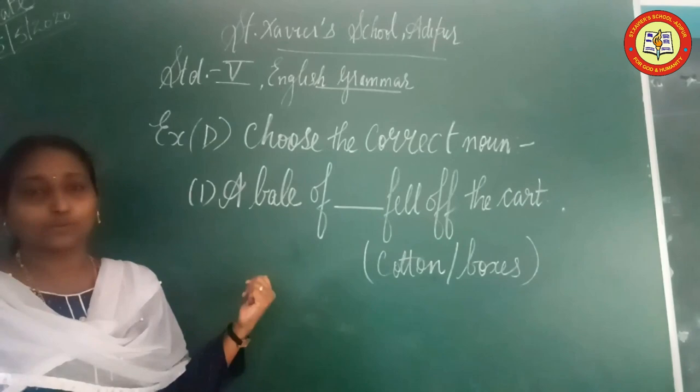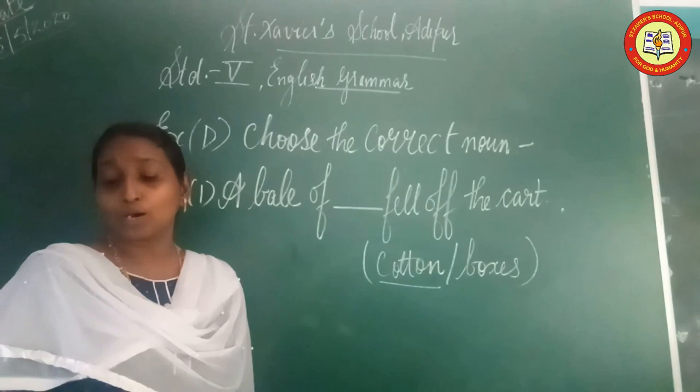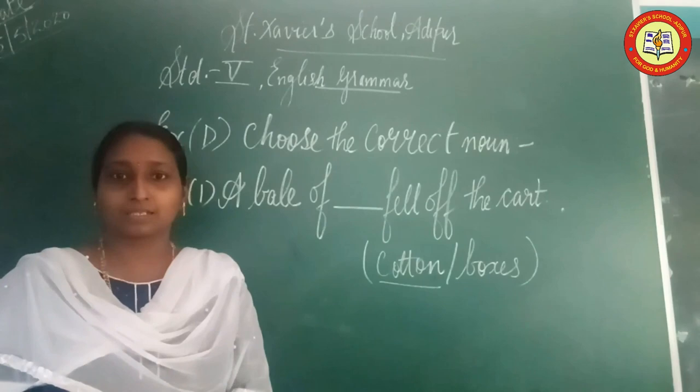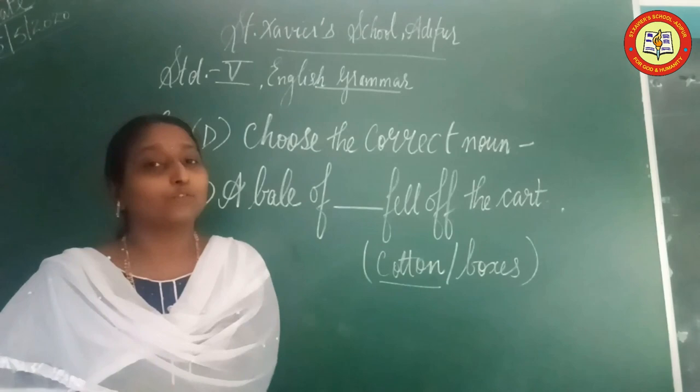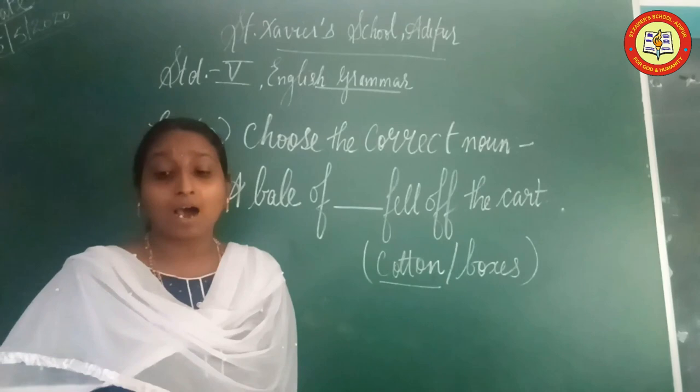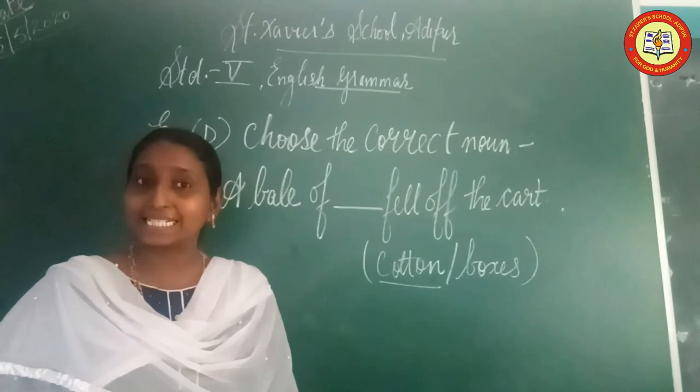Exercise D: Choose the correct word to complete each sentence. First: 'A bale of cotton fell off the cart.' Cotton is the correct answer. Second: 'We saw a pride of lions resting near the pond.' Third: 'The gaggle of geese was swimming in the lake.' Fourth: 'The child was lost in the crowd of people outside the theatre.' Crowd of people is a Collective Noun.